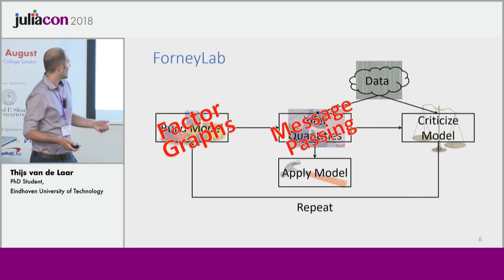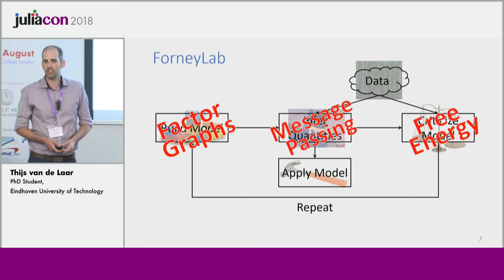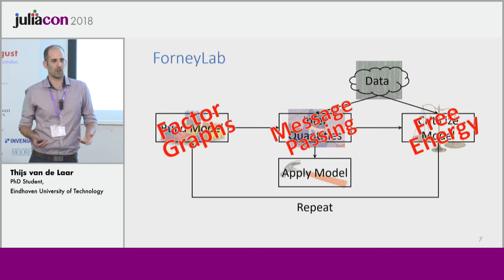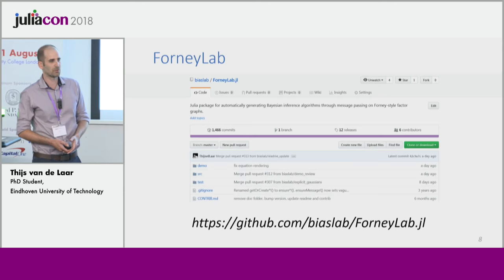What's convenient about these factor graphs is that we can perform message passing on them to infer the quantities that we're interested in. And finally we use the free energy as a measure for model performance, which is a number that indicates how well our data fit the model that we've postulated. If you put all these ingredients together and let it simmer for a few years, you end up with ForniLab — available on GitHub.